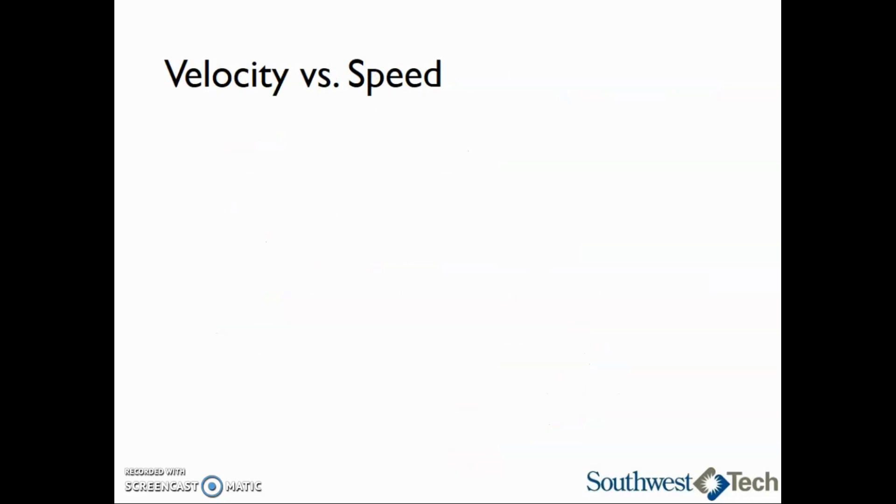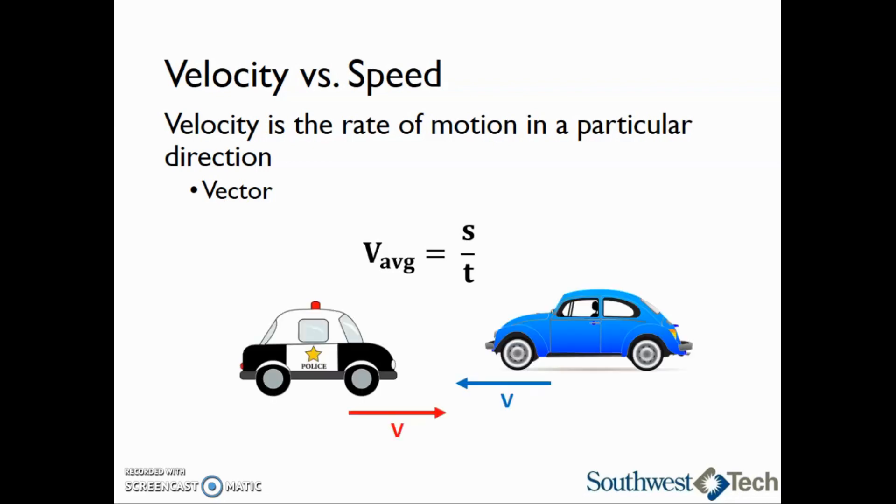When we are talking about velocity, it is the rate of motion or speed in a particular direction. Velocity is a vector, so it must have a magnitude and a direction. If we want to find the velocity or v_avg or v average, we will take the displacement s divided by time t. When we use this formula, we must specify a direction. The police car in this picture has a velocity pointing in the positive x direction, and the blue car has a velocity in the negative x direction.